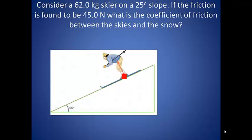So let's add in angles. Consider a 62 kg skier on a 25 degree slope. If the friction is found to be 45 newtons, what is the coefficient of friction between the skis and the snow?